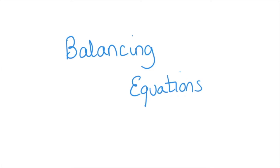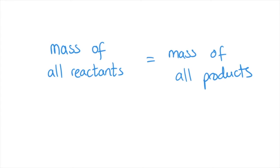Balancing equations. In a reaction, matter is conserved. That means we have to have the same number of atoms of an element on both sides of the equation. So the mass of all of the reactants has to be equal to the mass of all of the products. And this is the basis for us balancing equations.